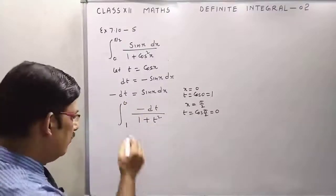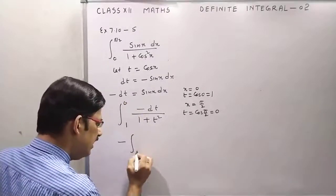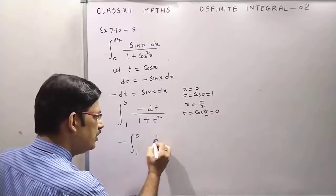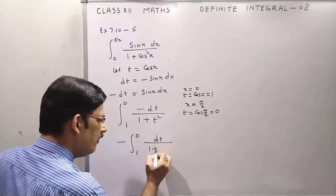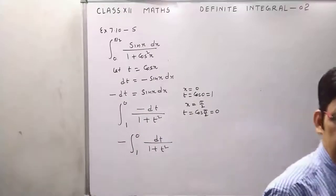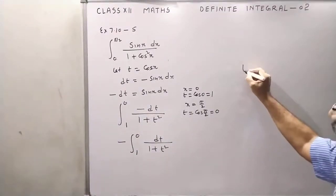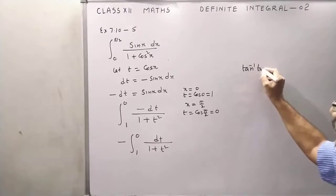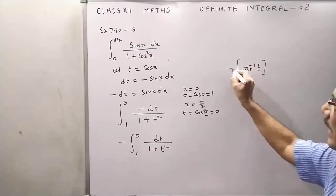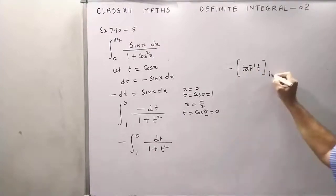Now take the minus sign outside. We have the integral from 1 to 0 of dt over 1 plus t squared. Now integrate this. This is the direct formula of tan inverse t. Take the bracket with the minus sign outside, limits 1 to 0.